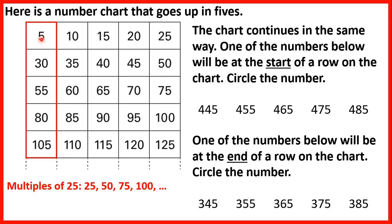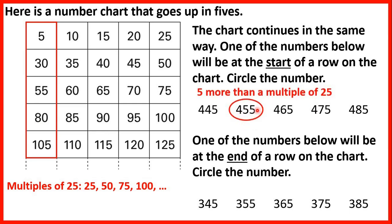So 5 is 5 more than 0. 30 is 5 more than 25. 55 is 5 more than 50. 80 is 5 more than 75. 105 is 5 more than 100. So we're looking for the number that is 5 more than a multiple of 25. 450 is a multiple of 25, so 455 is 5 more. So we know that if the pattern continues, 455 will be at the start of a row.